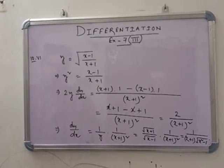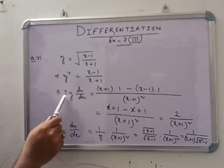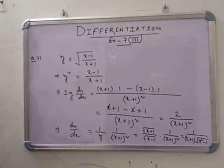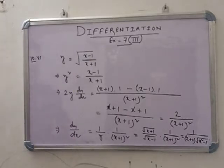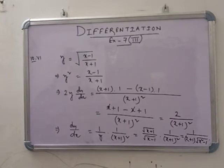In number 10a6, given y = √((x-1)/(x+1)). Squaring both sides: y² = (x-1)/(x+1). Differentiating: 2y·(dy/dx) = [(x+1)·1 - (x-1)·1] / (x+1)² = 2/(x+1)². The 2s cancel, so dy/dx = 1/y · 1/(x+1)². Substituting y = √((x-1)/(x+1)) gives dy/dx = 1/[(x+1)·√(x²-1)].